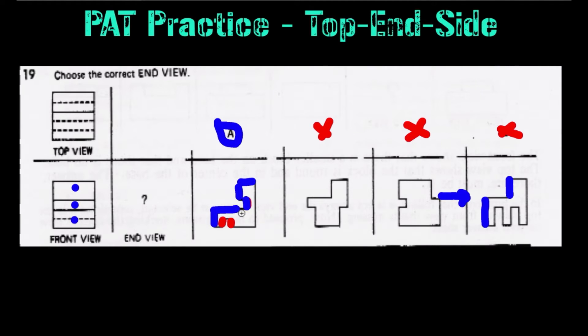And as you can see in just this example, the dotted lines are key to being able to discern which answers are correct and which answers are not correct or consistent with the given two views of this question.